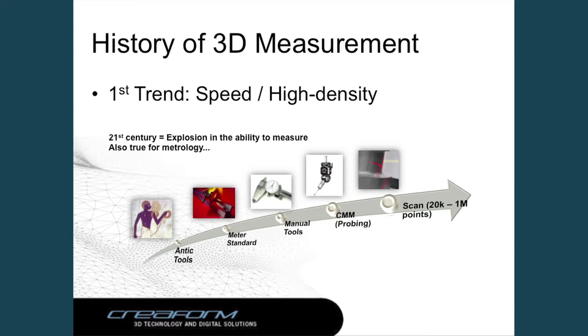Since maybe 20 years or so, there has been 3D scanning — laser scanning, white light scanning — all those devices creating high-density measurements, going from one point at a time with the CMM machine to thousands and millions of points per second. That is the first trend in the evolution of 3D measurement.